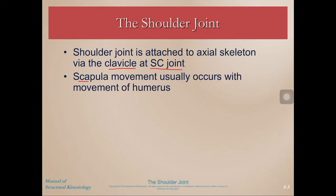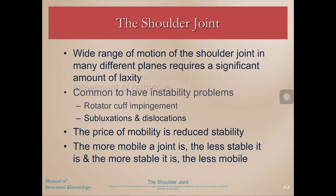As the humerus moves, scapular movement usually also occurs, so we have that synergistic effect between shoulder joint movement and scapular movement. The shoulder joint is capable of a wide range of motion in many different planes, but this requires a significant amount of laxity, which in turn leads to some common instability problems.